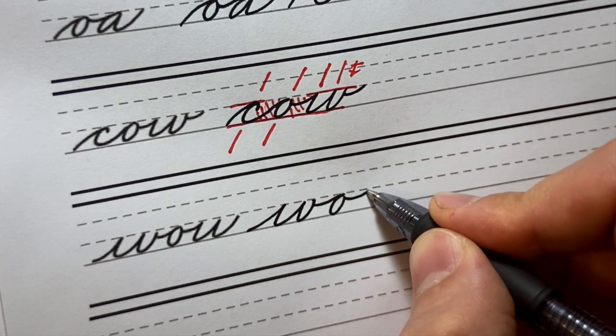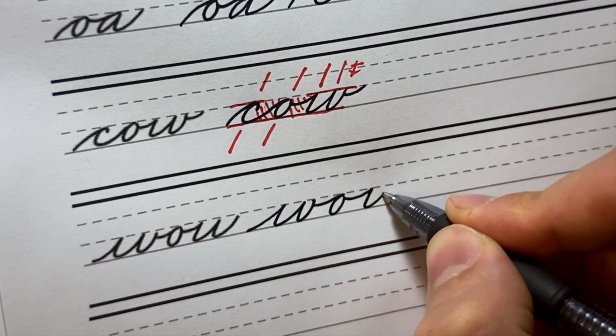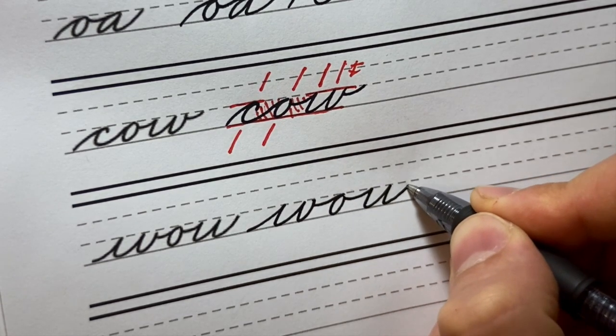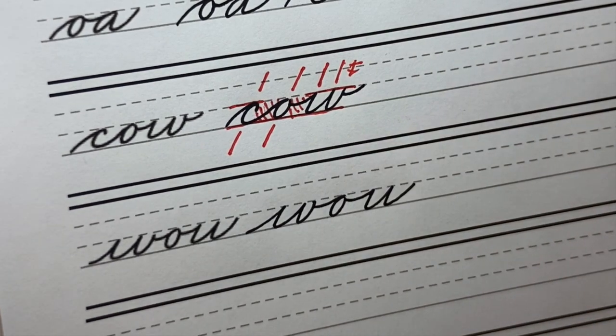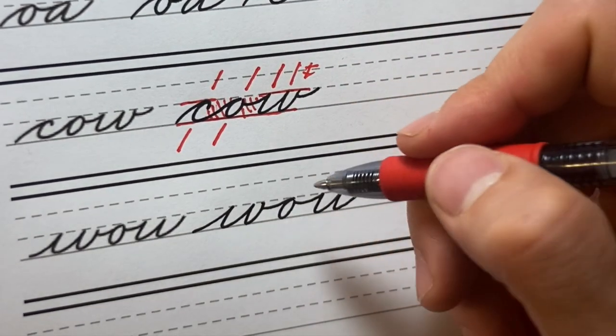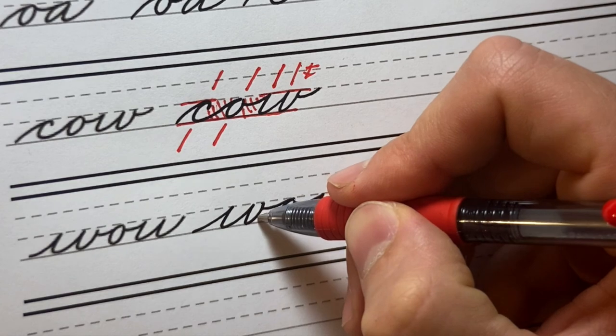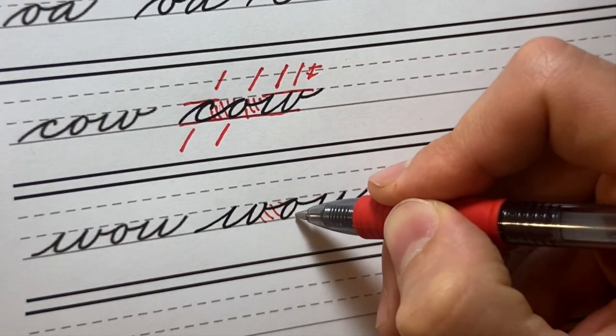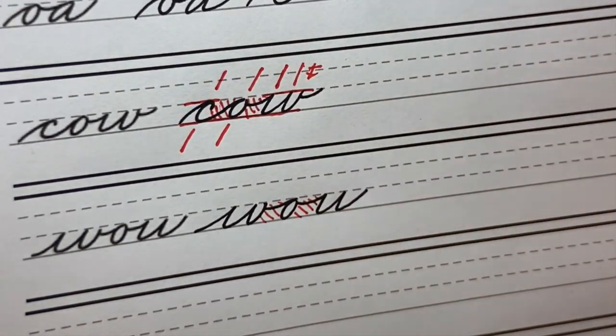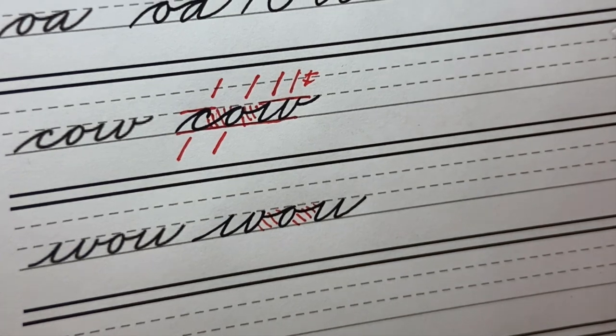And then again, going from the O to the U, looking to have really great space in here. This one looks really well spaced. If I'm just looking at the space between the W and the O and the O and the U looking very equal, that's great.